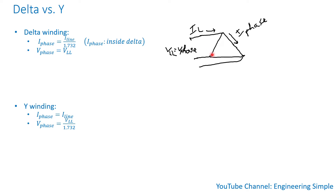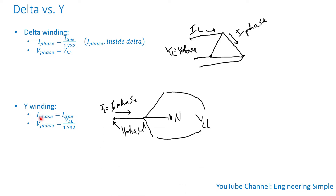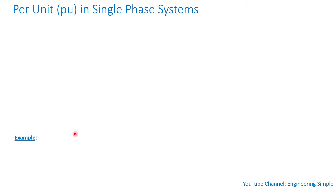For a Y winding, the phase current is the same as the line current. In a Y winding you have one winding, two windings, three windings, and a neutral. The line current flows directly into the winding, so line current equals phase current. The phase voltage is from the line to neutral, and the line-to-line voltage is from line to line, so phase voltage equals line-to-line voltage divided by √3.